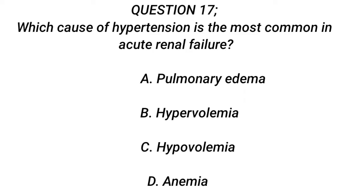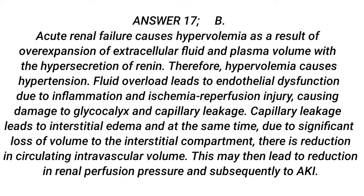Question 17. Which cause of hypertension is the most common in acute renal failure? A. Pulmonary edema. B. Hypervolemia. C. Hypovolemia. D. Anemia. Answer 17: B. Acute renal failure causes hypervolemia as a result of overexpansion of extracellular fluid and plasma volume with hypersecretion of renin. Hypervolemia causes hypertension. Fluid overload leads to endothelial dysfunction due to inflammation and ischemia-reperfusion injury, causing damage to the glycocalyx and capillary leakage.